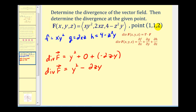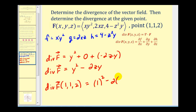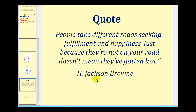Evaluating at the given point where y equals 1 and z equals 2: we get 1 squared minus 2 times 2 times 1, which is 1 minus 4, giving us negative 3. So at this point in the vector field, the divergence is negative, meaning the rate of change is inward. If we had a balloon or box at that point, its volume would be compressed. I hope you found this video helpful.